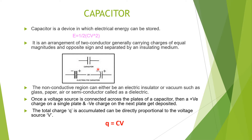Here you can see the arrangement of a capacitor. Two conductors — we know that conductors are charge carriers — are connected and separated by some distance. That space is generally an insulating medium, and these two plates carry charges of equal magnitudes but opposite sign.